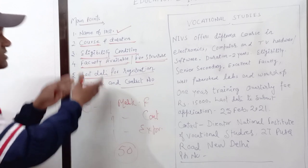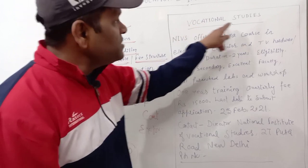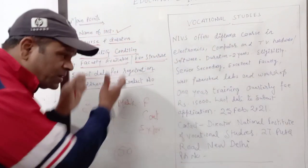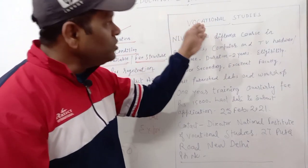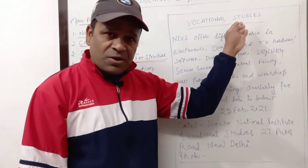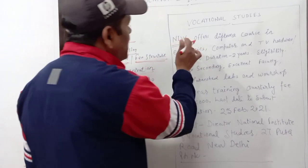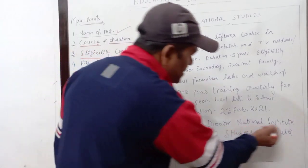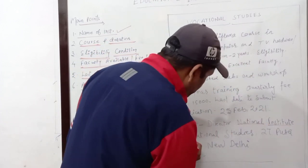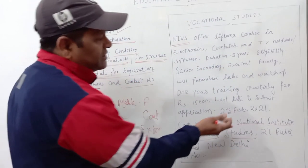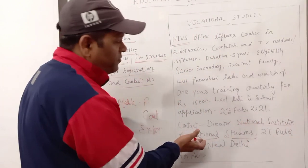On the basis of these points, let me clarify this sample. For the heading, you can write 'Vocational Studies' — you can change the heading as per the question. It's not mandatory. For the name of institution, it is given as NIVS, which stands for National Institute of Vocational Studies. That is the abbreviation written here.